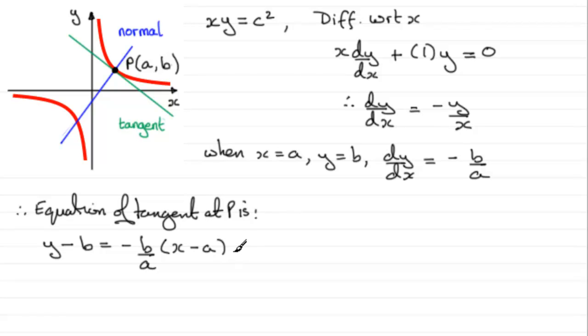You could leave it in this format, but if we want to get rid of that fraction A, we would therefore multiply both sides by A, giving us AY minus AB equals minus B times that bracket, and if we expand that, we're going to get minus BX plus AB.